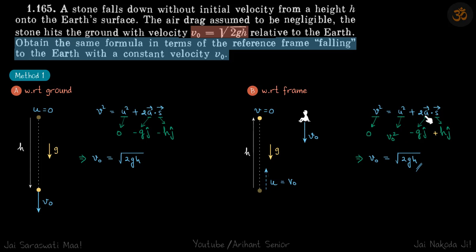2as: a is same in both the reference frames so that is -g ĵ cap, and displacement this time is +h ĵ cap because with respect to the observer the ball has moved up. If you put those values you get v₀ = √2gh, and hence we have proved that in this reference frame also velocity comes to be same.